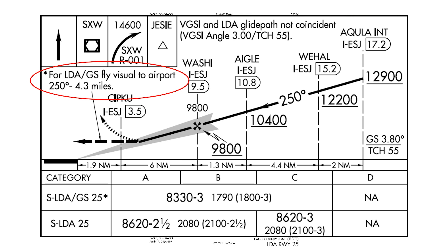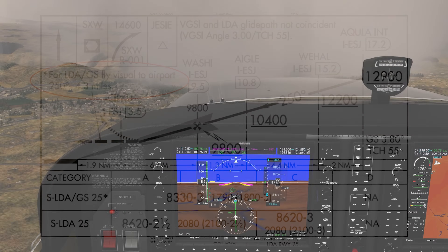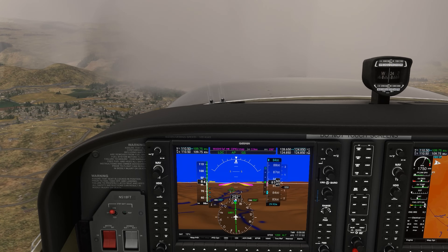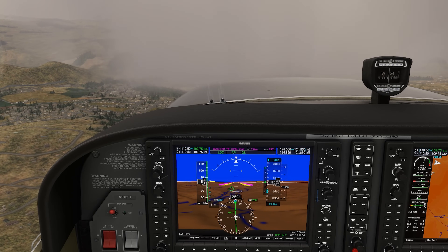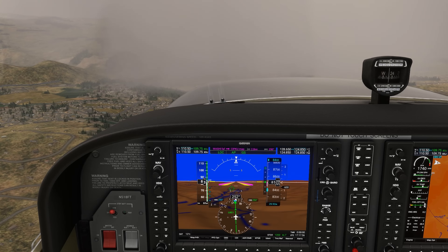As long as we have the required visibility, we can continue inbound on that 250 course until spotting the runway. The missed approach point is SIPCU, the 3.5 DME from the localizer — which is situated on the far end of the runway — roughly 3 miles from the runway threshold, accounting for conversions between nautical and statute miles. So if you're at 3.5 DME and don't see the runway, you don't have the required visibility to continue the approach and should go missed. This is an important briefing item because you don't want to get caught off guard by a fly visual segment where you're holding a course instead of following instrument guidance.